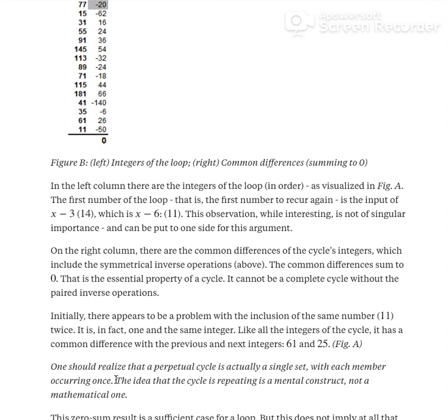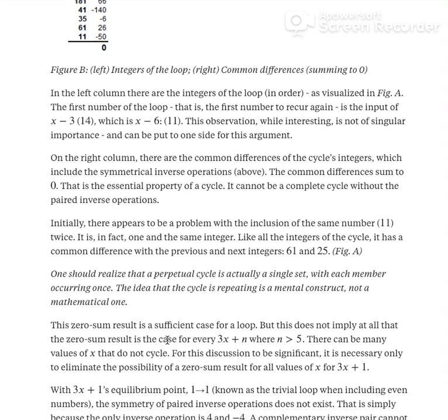So what makes it a cycle? It's simply the sum of common differences being zero. The idea that the cycle is repeating over and over again is a mental construct, not a mathematical one. The zero-sum result is a sufficient case for a loop. But this does not imply at all that the zero-sum result is the case for every 3x+n where n is greater than 5. There can be many values of x that do not cycle. For this discussion to be significant, it is necessary only to eliminate the possibility of a zero-sum result for all values of x for 3x+1.